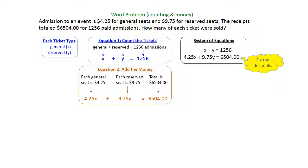Whenever you're working with decimals, I suggest you fix those decimals by multiplying that particular equation by 100. You just move the decimal to the right two places, and it gets rid of them all together. In some cases, the number itself becomes pretty big on the right hand side, but you can handle that. So that gives us our new second equation is 425x plus 975y, and that's equal to 650,400.